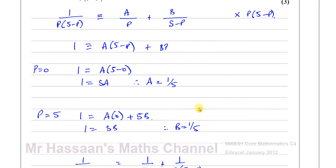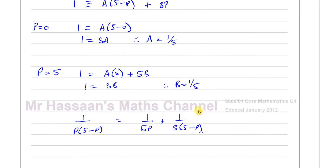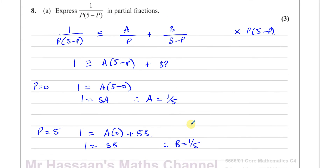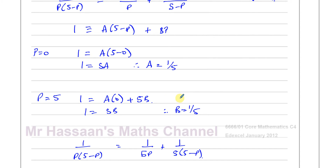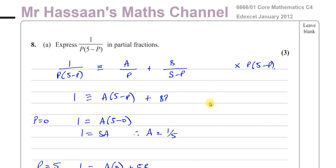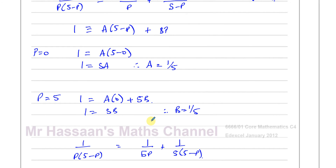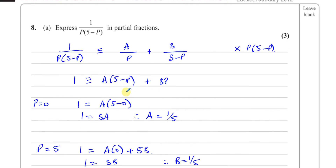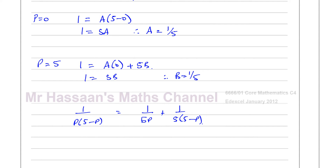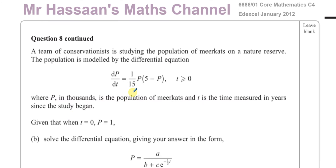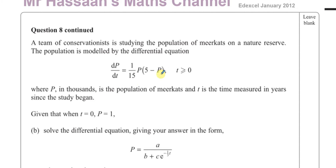So those are the two fractions. A equals 1/5 and B equals 1/5. That's the answer to Part A — a straightforward partial fractions question. Part B is asking something different, and there's clearly going to be a relation to Part A.